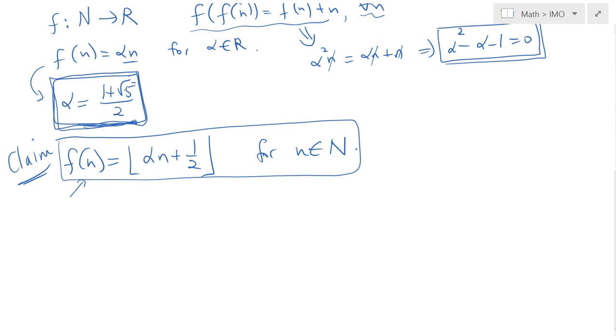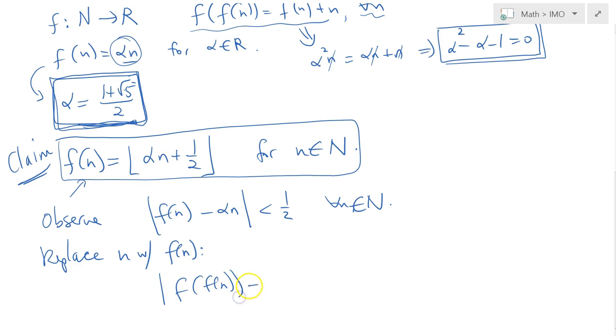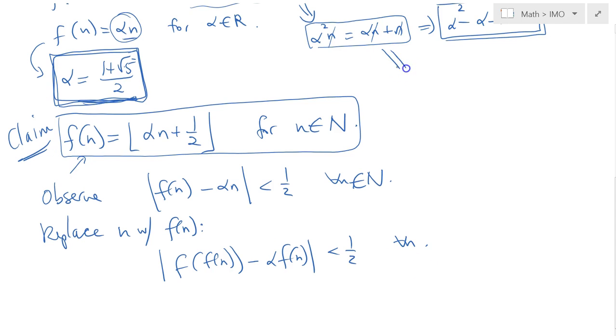Let's start with the second one first. Because this floor function provides the closest integer to this real valued function, we can confidently say: observe the absolute value of f(n) minus alpha n is strictly less than one half for all n in N. Now I can replace n with f(n), and we would get that the absolute value of f(f(n)) minus alpha f(n) is strictly less than one half, again for all n.